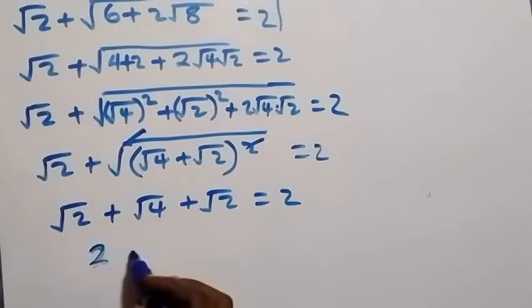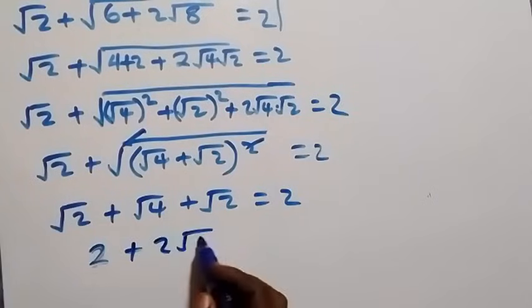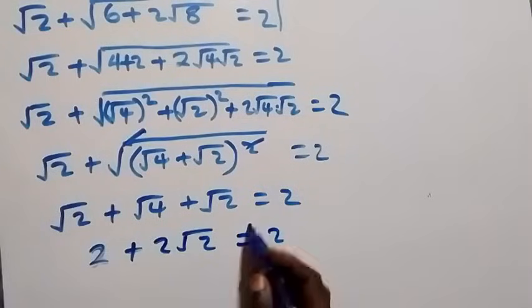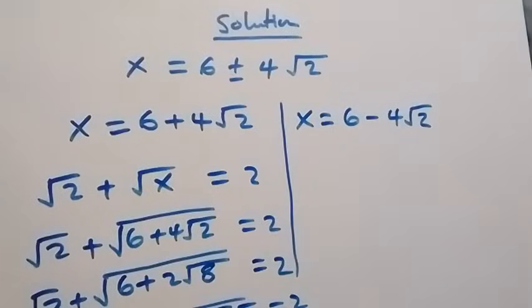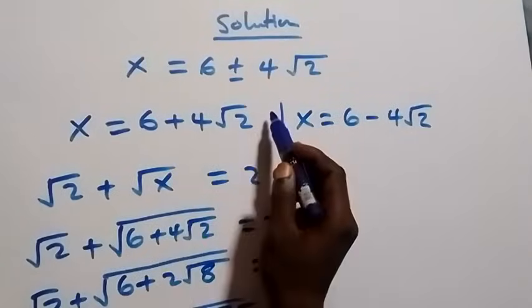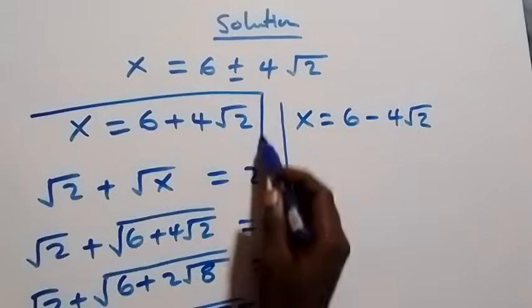This gives 2 plus 2 root 2, which is not equal to 2. It follows that x equals 6 plus 4 root 2 does not satisfy the given problem, so this is not a solution.